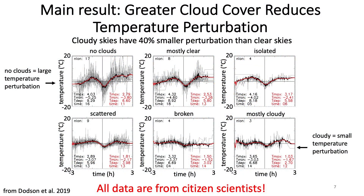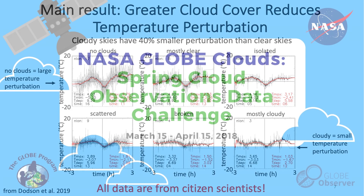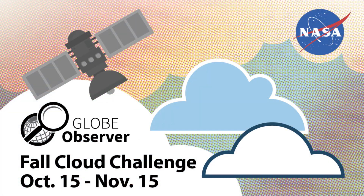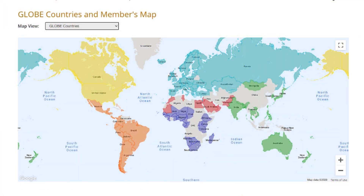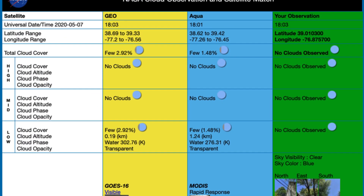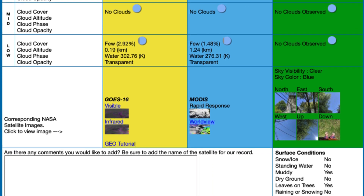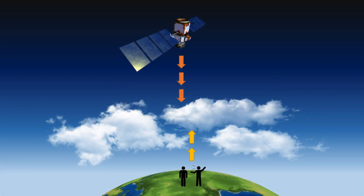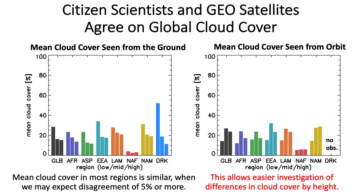I was able to show a connection between the cloud cover during the eclipse with the temperature drop induced by the passing lunar shadow. More recently, I have been looking at the data collected during the Spring Cloud Challenge of 2018 and the Fall Cloud Challenge of 2019. Because these challenges were worldwide events, I was able to show how the distribution of clouds changes from region to region of Earth. One of the greatest advantages of GLOBE Clouds data is the satellite matching component, where your reports are linked with meteorological satellite data from both geostationary and low Earth orbits. This provides a comprehensive view of clouds from below and above. Using the satellite match data, I have shown that both GLOBE participants and satellites agree closely on the distribution of cloud cover across the planet.